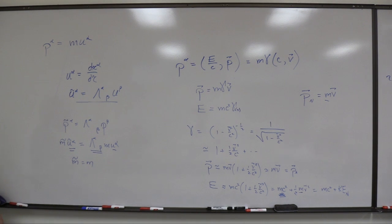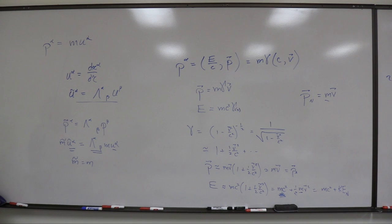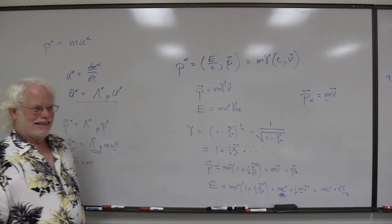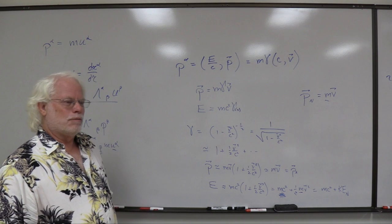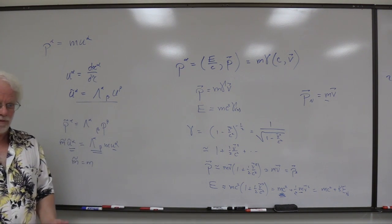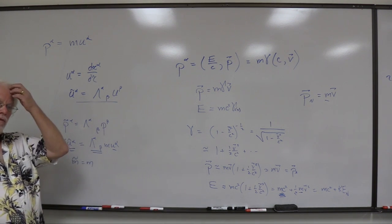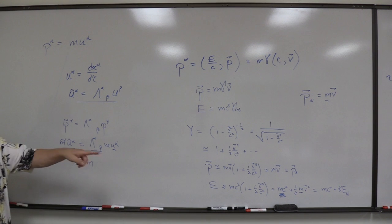We do a binomial approximation for E at low velocity — it's just a Taylor series. To compute rest energy for different particles, move into the rest frame of the particle — move with the particle so it's at rest in your frame — and the energy you measure for it is just mc².